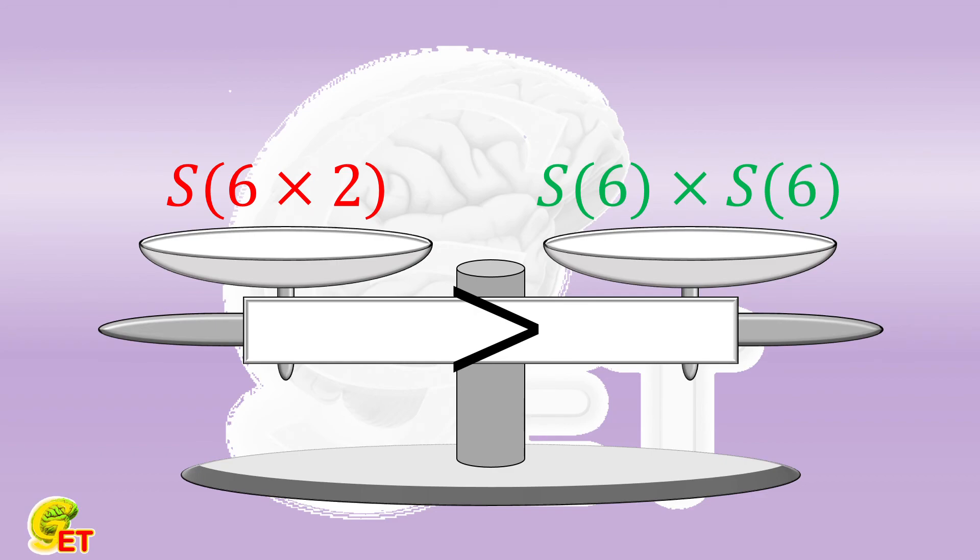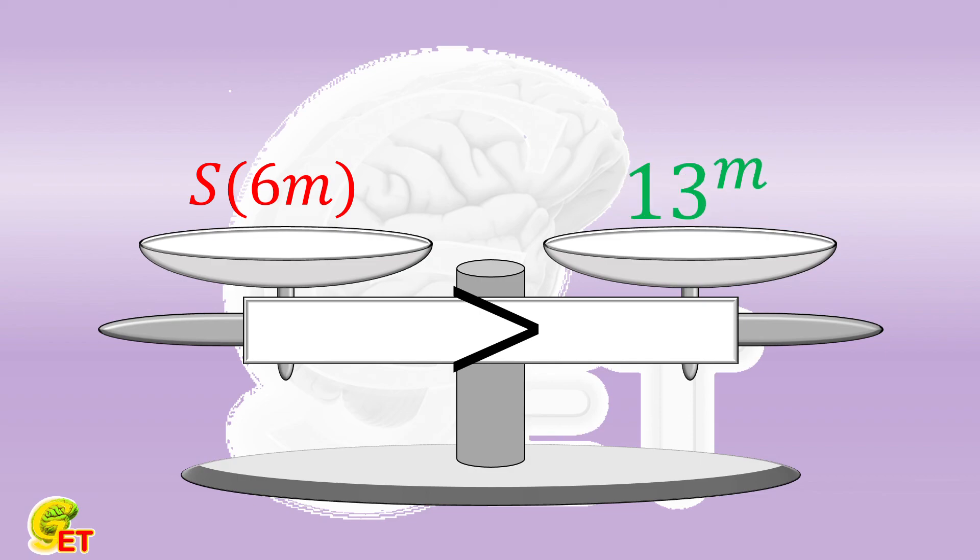For the same reason, for any natural number m bigger than 1, S of 6 times m is bigger than S of 6 to the mth power. S of 6 is equal to 13, so it is bigger than 10 to the mth power.